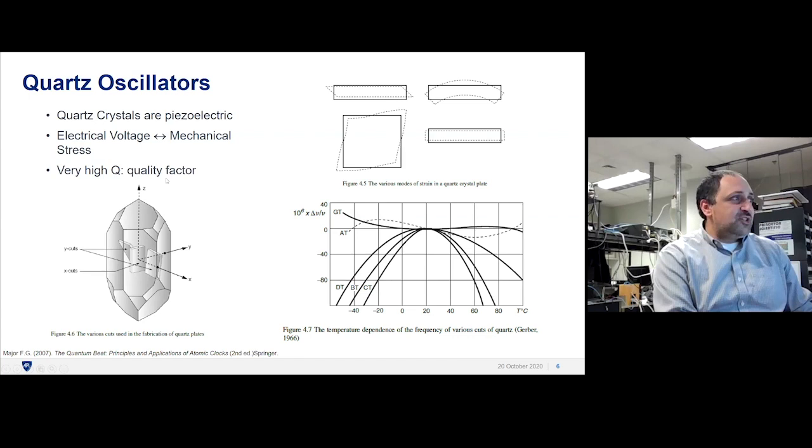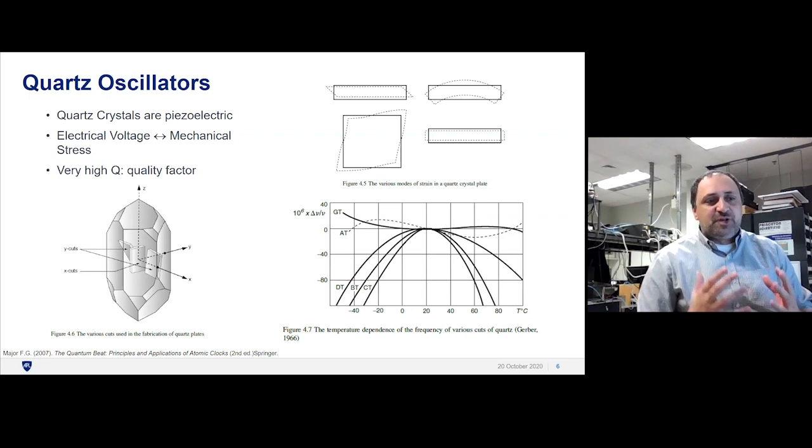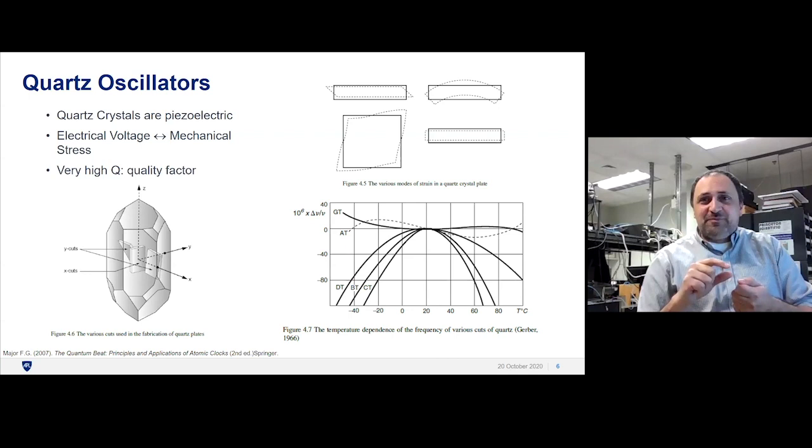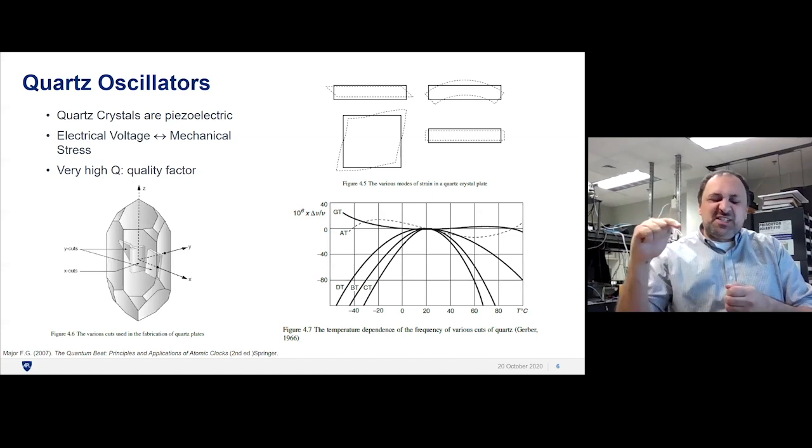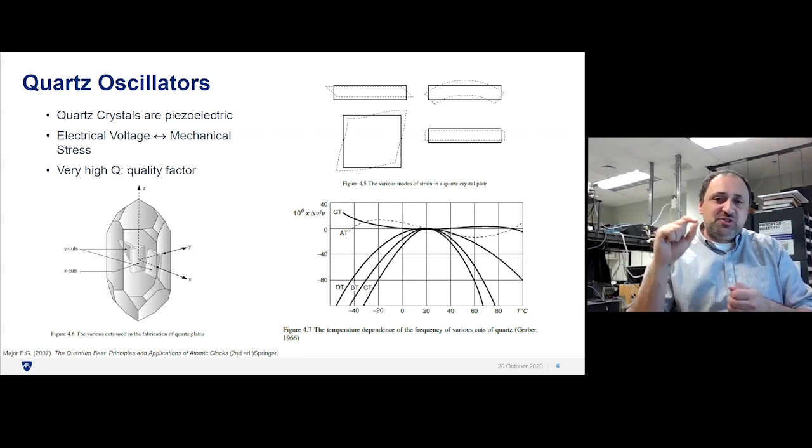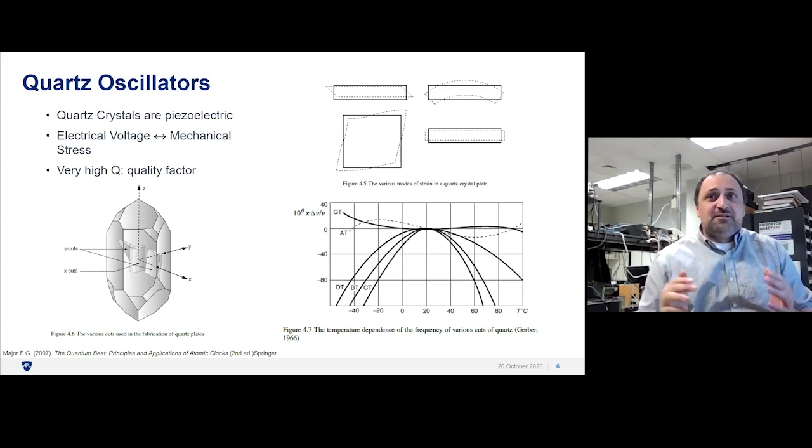The reason why it's such a good oscillator is it has something called a high Q. A Q is, for a resonator, the ability to store energy. Try it out sometimes—as you fill up a glass, it's harder to sustain an oscillation by wetting your finger and running it around the rim versus an empty glass. You're changing the Q because you're dampening it. It's not free to oscillate.